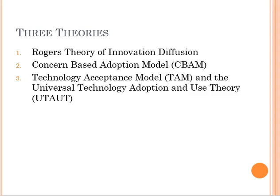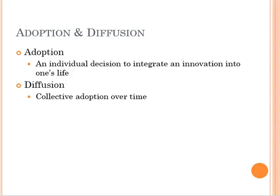Straub looks at three theories: Rogers' theories of innovation and diffusion, the concerns-based adoption model, the technology acceptance model, and the universal technology adoption and use theory. For our purposes here, we want to start with some basic definitions. One is adoption and diffusion.